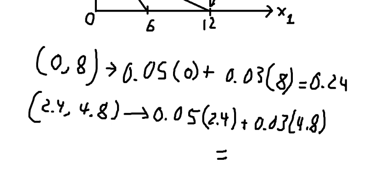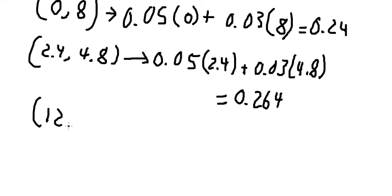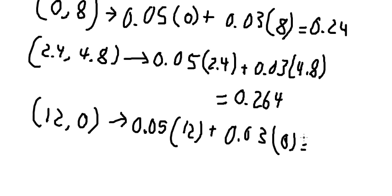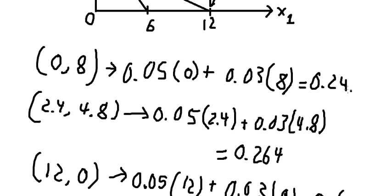For the point (2.4, 4.8), we get 0.264. And the last corner point gives us 0.6. If we compare all the values, we need to select the one with the minimum cost, which is 0.24.